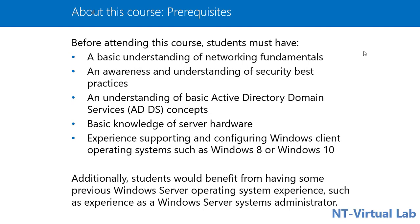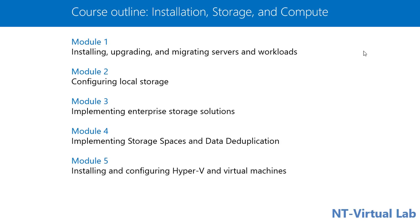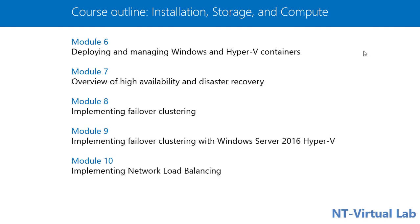Our first part covers installing storage and compute with Windows Server 2019. The modules include: Module 1 — installing, upgrading, and migrating Windows servers and their workloads; Module 2 — configuring local storage; Module 3 — implementing enterprise storage solutions like iSCSI or Fibre Channel; Module 4 — storage spaces and data deduplication; Module 5 — installing and configuring Hyper-V and virtual machines; Module 6 — deploying and managing Windows servers with Hyper-V containers.